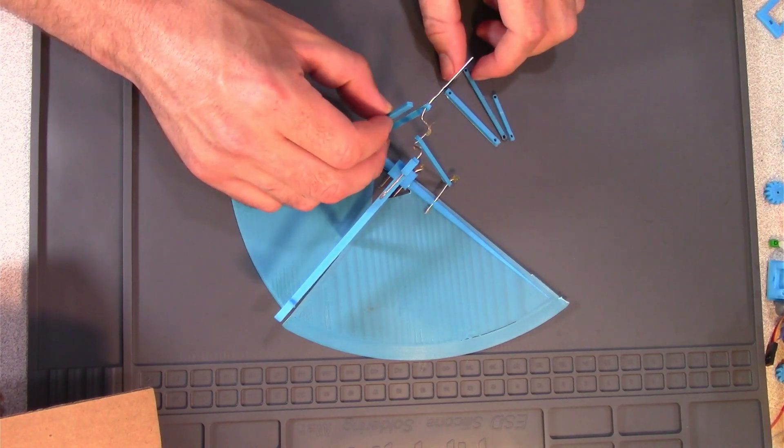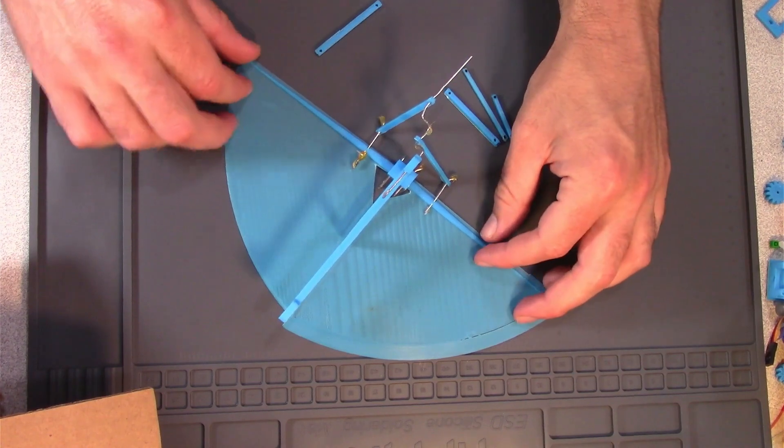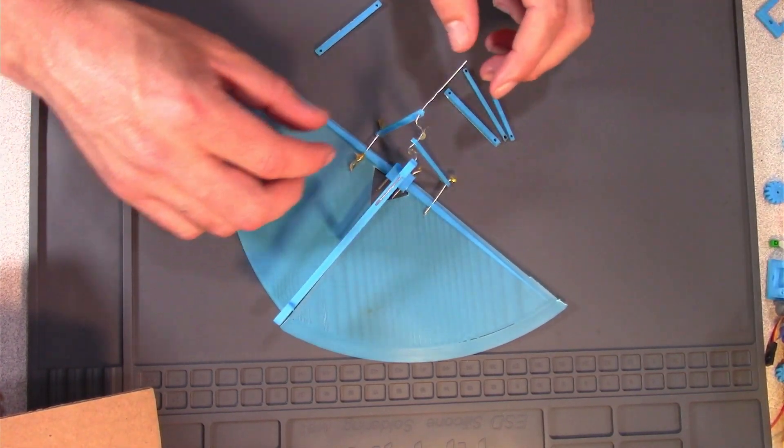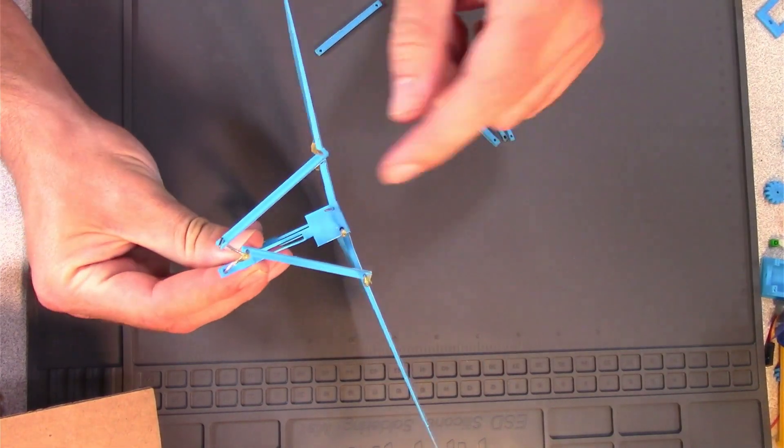So if one lever was too long or too short, the wings wouldn't sit flat on the table. And once I was able to get the wings to sit flat on the table, I knew I had the right size levers coming off the crankshaft.